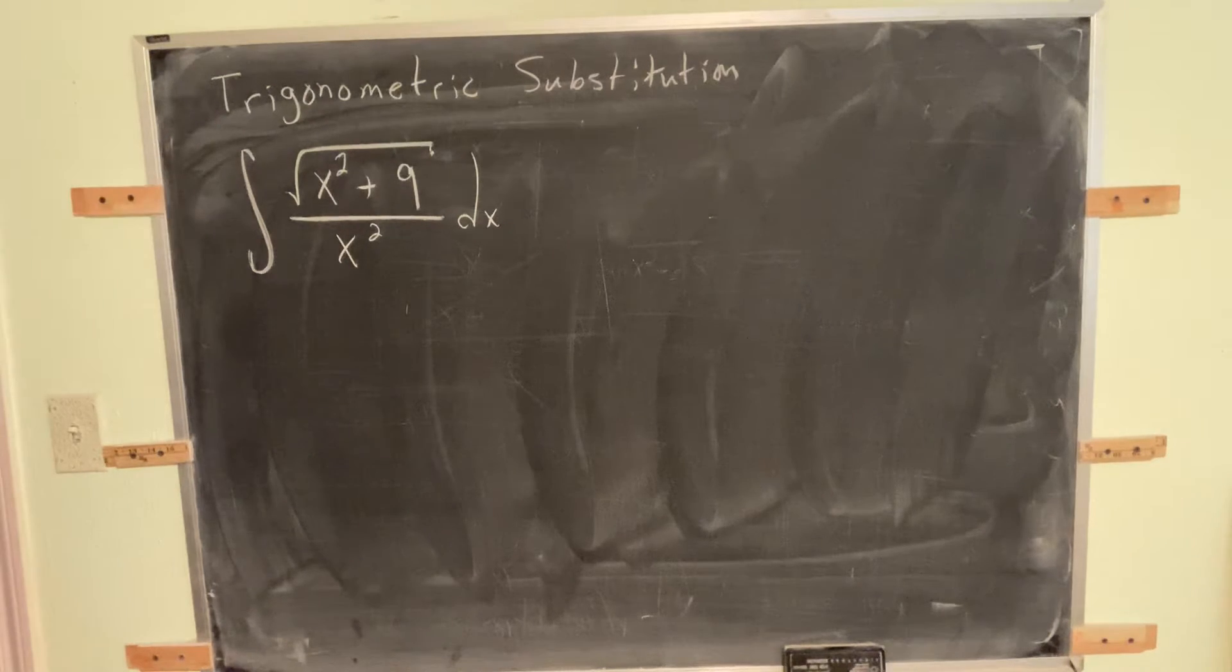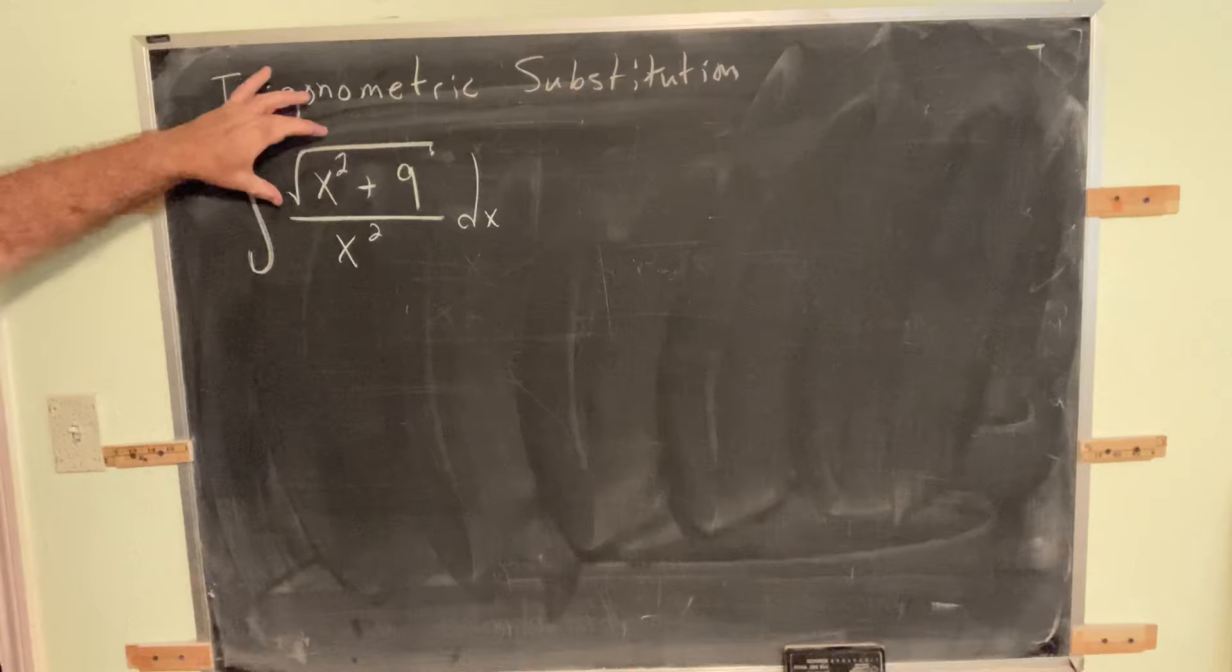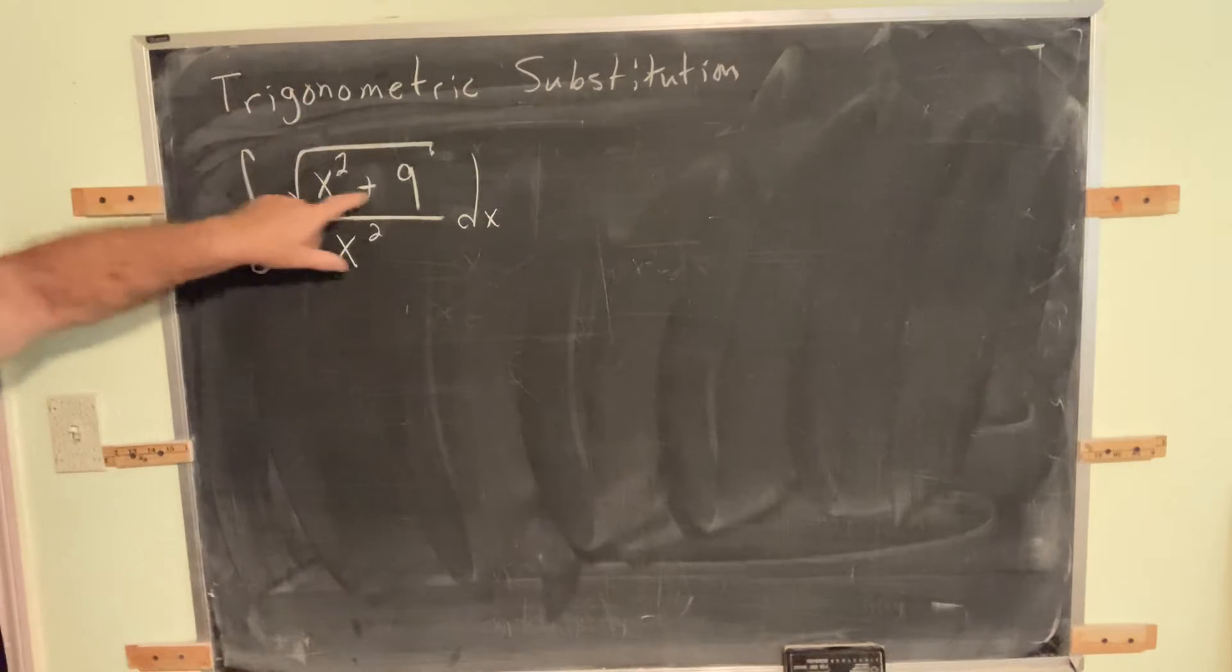All right, so here's our next example of trigonometric substitution. Notice this time we have the radical with a square and a square, but this time it's radical square plus square.